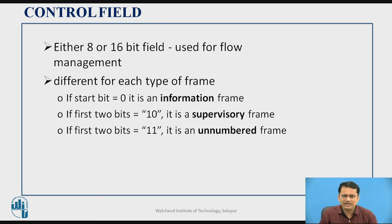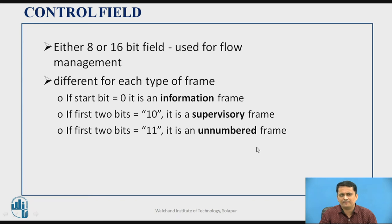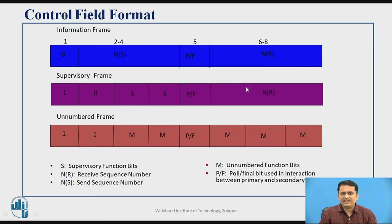The control field can be either 8 or 16 bits and is used for flow management. The control field also determines what type of frame it is: if it starts with 0, it is an information frame; if it starts with 1 0, it is a supervisory frame; if it starts with 1 1, it is an unnumbered frame.